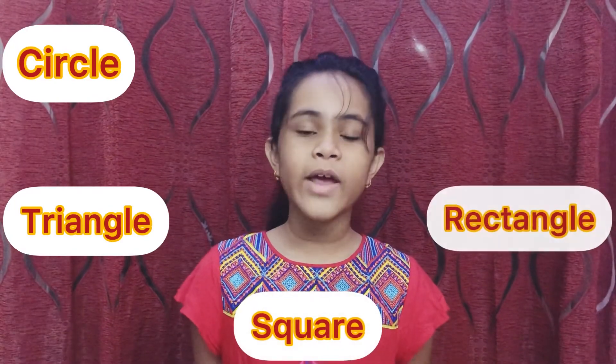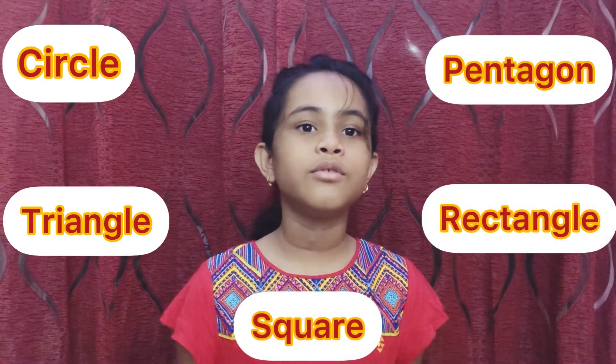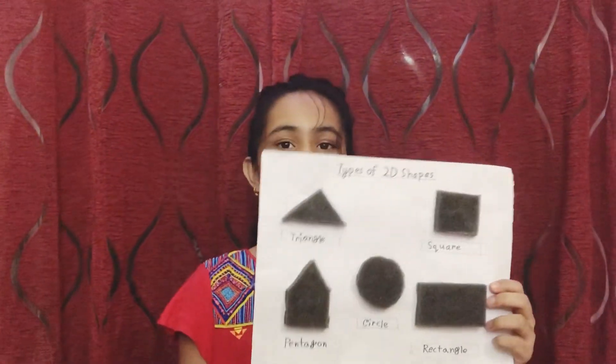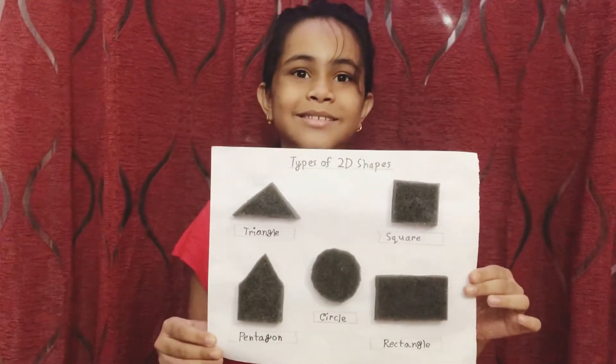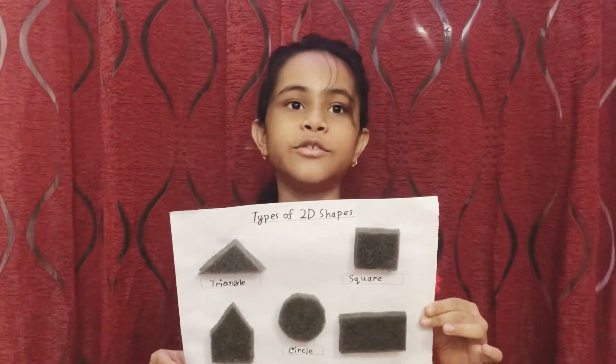A circle, triangle, square, rectangle and pentagon are examples of 2D shapes. Look, I have prepared a board of 2D shapes. So, let's learn more about these 2D shapes.